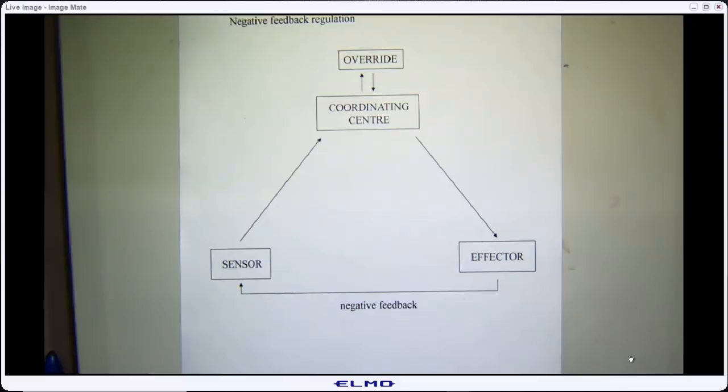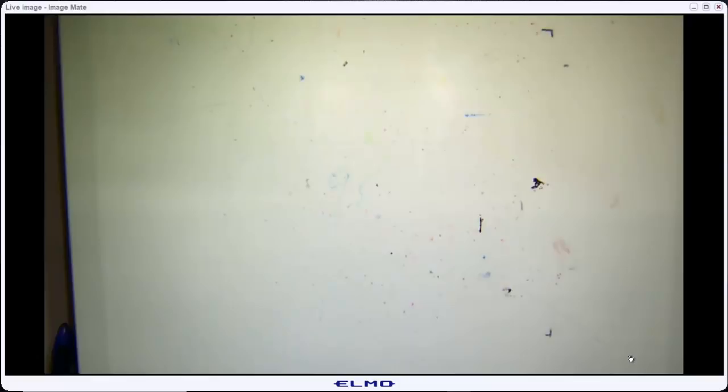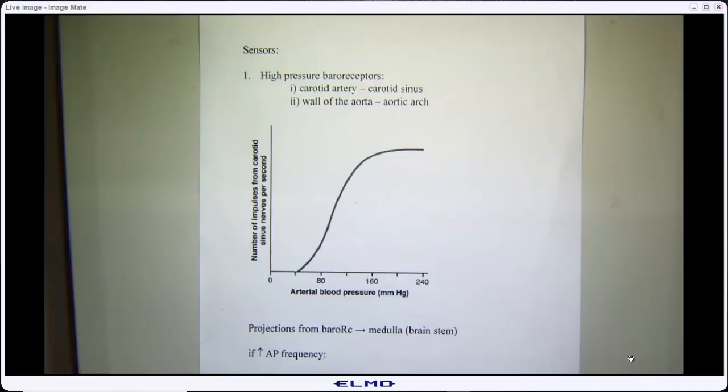Now we just need to complete the loop — make a system where we can actually plug mean arterial pressure information into the coordinating center so that the coordinating center can then dictate what the sympathetic nervous system is going to do or what the parasympathetic nervous system is going to do. So this is where we're headed today.